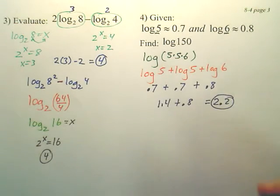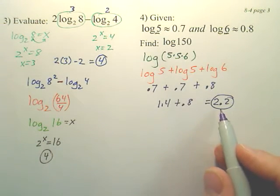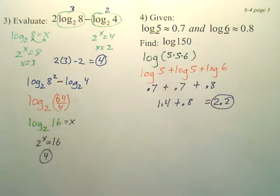So log 150 is 2.2, as long as you knew these things. You just got to deal with your condensing and expanding.